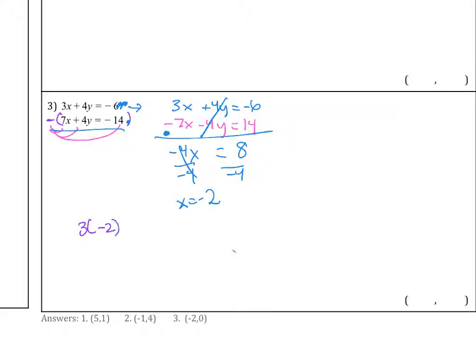3 times negative 2 plus 4y equals negative 6. So I want to solve for y. This is negative 6 plus 4y equals negative 6. Then we add 6 to both sides and what we get is 4y equals 0.